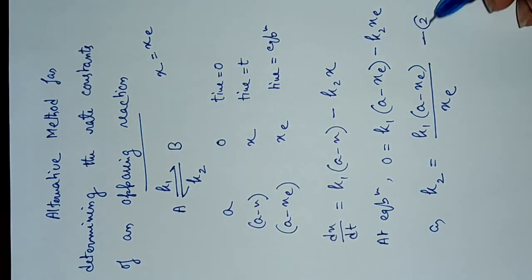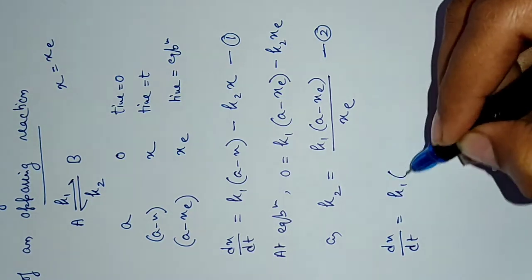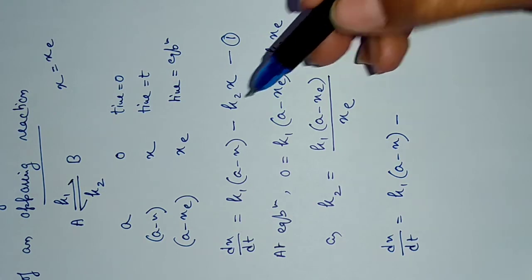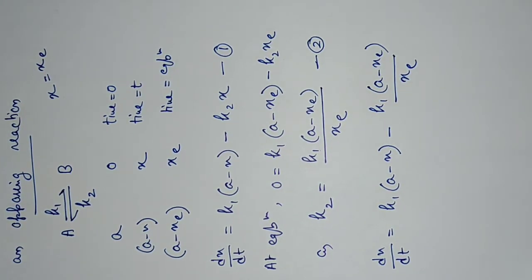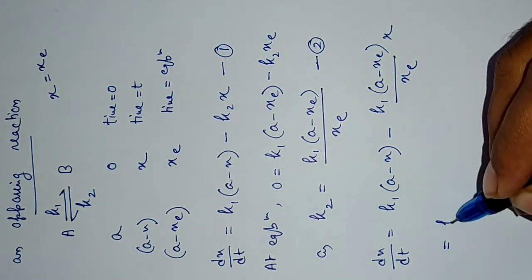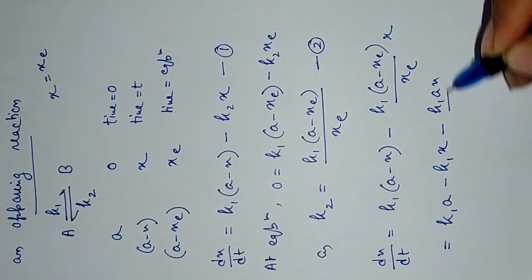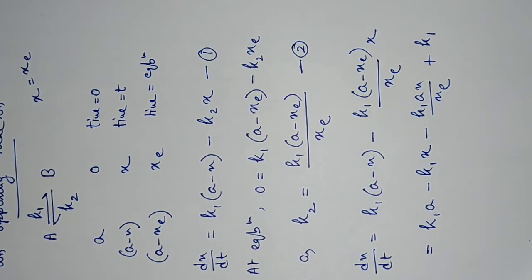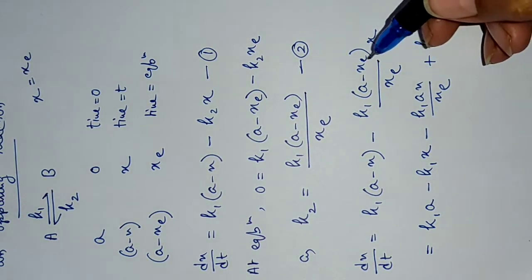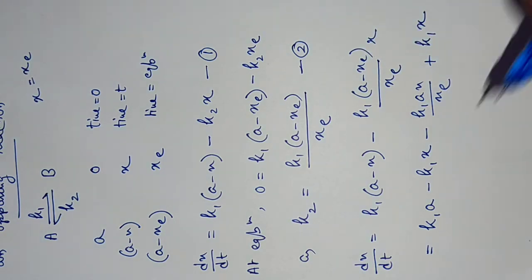We substitute this value of k2 into equation 1: dx/dt = k1(a - x) - [k1(a - x_e)/x_e]·x. Performing the simplification: k1·a - k1·x - k1·a·x/x_e + k1·x_e·x/x_e, and the last two terms cancel each other.